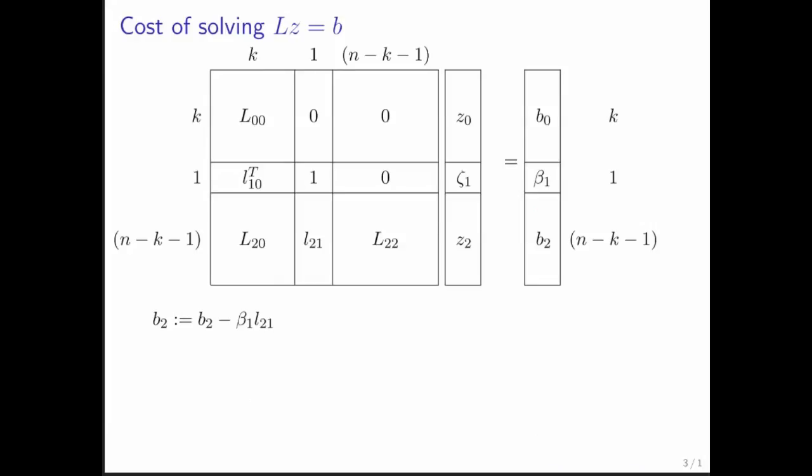Let's have a look at the cost of solving Lz equals b. So what I did here is I put z here, b here, and l here. Recall that if we overwrite b with z, then the update that happens in each step is this right here, and we recognized that as an Axpy.